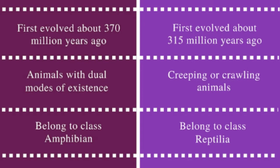Amphibians have dual modes of existence, meaning they can live in an aquatic environment and also on land. Reptiles have existence on land — they creep and crawl on the land, so creeping and crawling animals are included in reptiles.